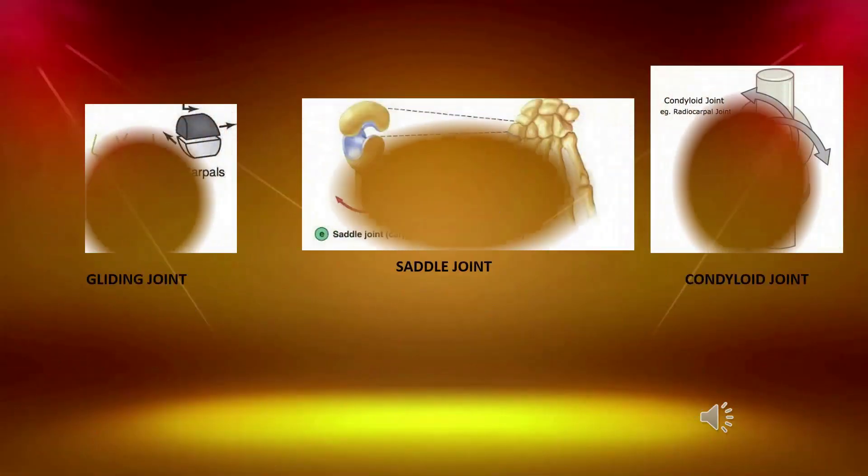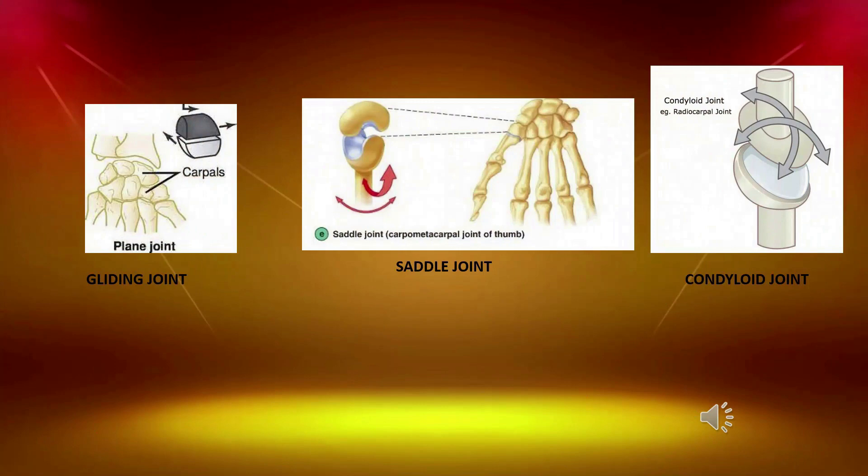This diagram shows the gliding joint at the wrist, the saddle joint between the carpal and metacarpal of the thumb, and the condyloid joint.